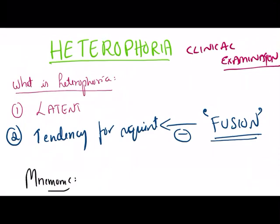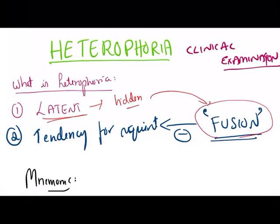What is heterophoria? Heterophoria is nothing but a latent squint or a hidden squint where the squint is not manifested due to the action of fusion. The patient is having fusion, and because of that the tendency for squint is inhibited by the fusion.